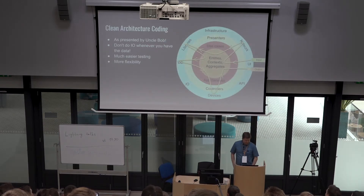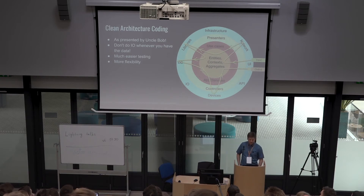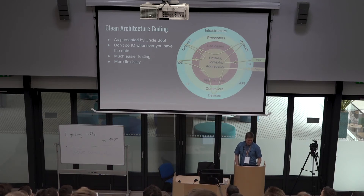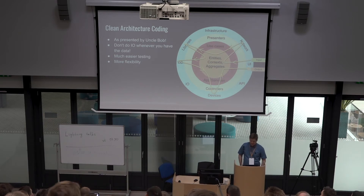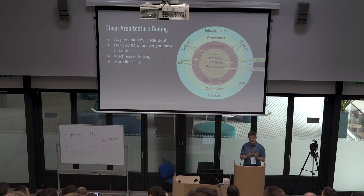One important thing I think is missing a lot when people use Jupyter notebooks — do any of you know Uncle Bob? There's this clean architecture idea which says you have to put an input-output layer outside your application. So you don't do input-output whenever you have the data. In a Jupyter notebook, you have, like, 'Oh, I got this heat map — let me save it somewhere.' That's the basic idea.